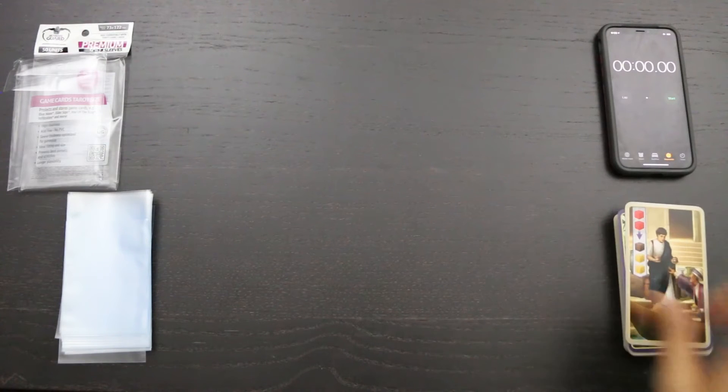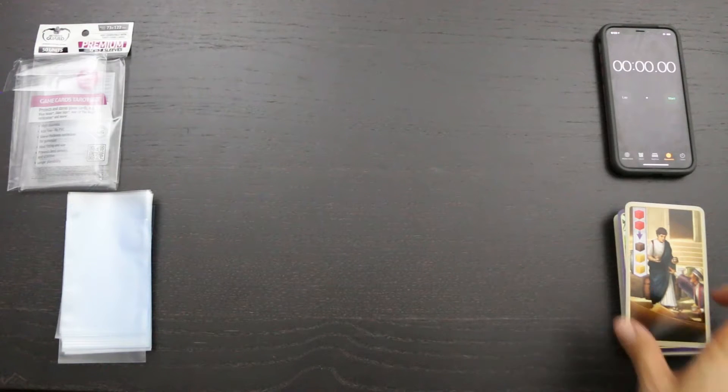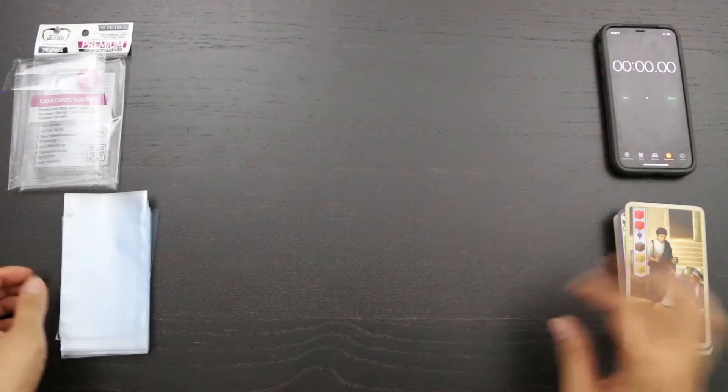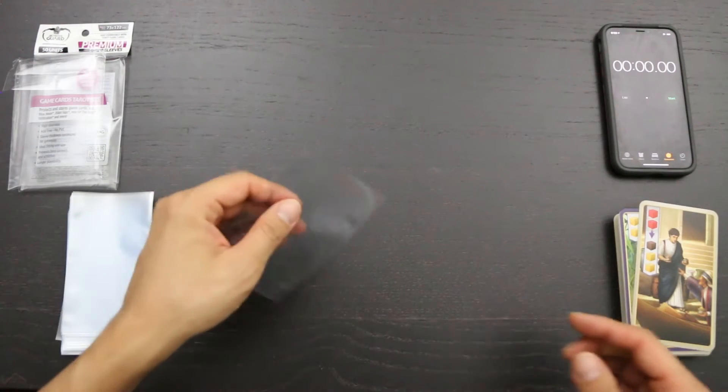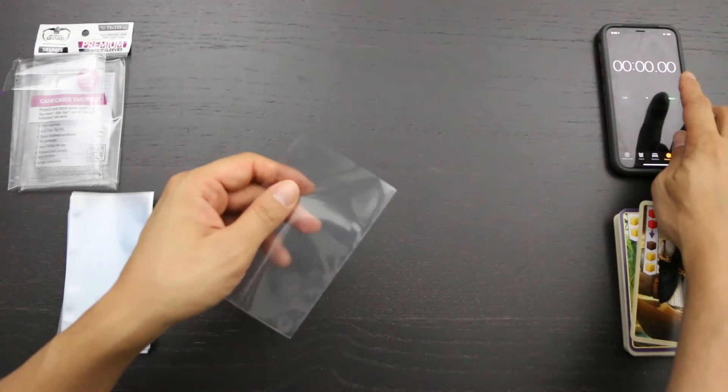Now we're going to do the sleeving test. I have 45 Century Spice Road cards here and 50 sleeves here. I'm going to put these into the sleeves and see how long it takes. Ready, set, go!